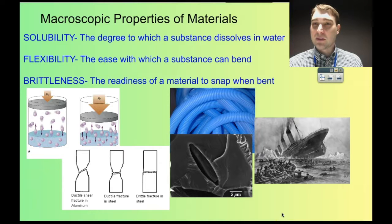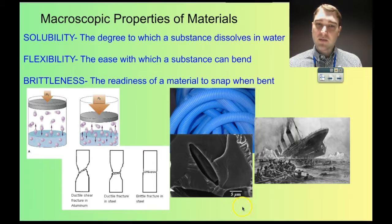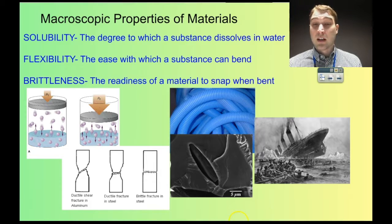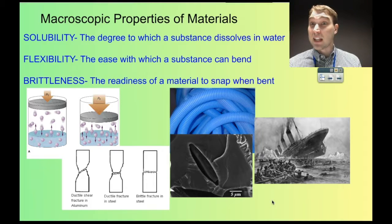Brittleness — you usually want materials to be hard, not brittle, but sometimes brittleness can be handy. Here we have a picture of the Titanic, and one of the reasons why it sank is because the rivets used to hold the steel plates of the hull together were more brittle than they should have been. The steel had too much carbon in it — too much carbon in steel makes it very brittle. When force was applied by the iceberg, a lot of the rivets broke and snapped, allowing water in. Scientists who looked at the carbon content of the steel said it was way too high; if a higher quality steel with less carbon had been used in the rivets, the Titanic might not have sunk.